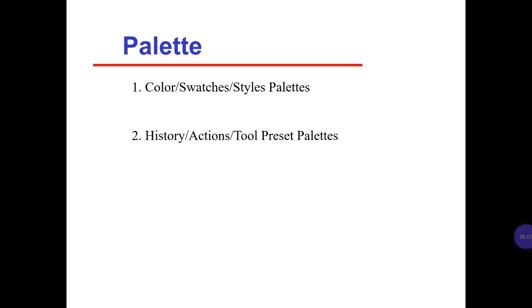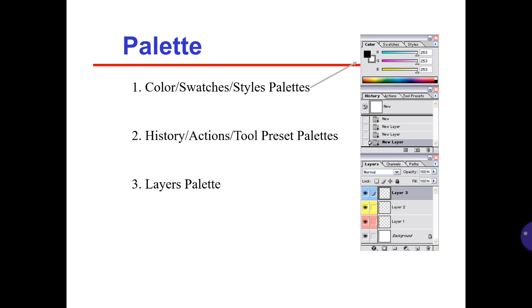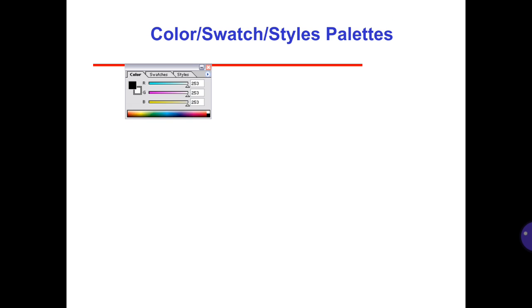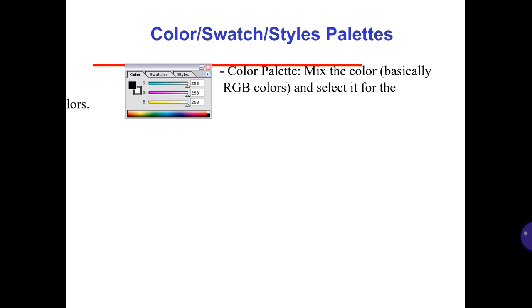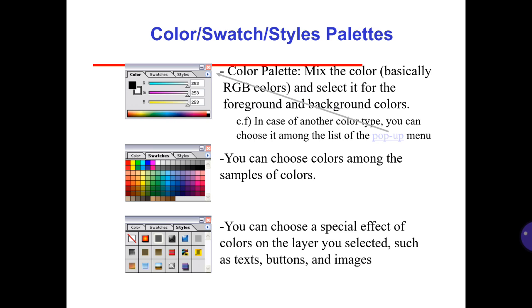Palette number one: Color, Swatches, and Styles palette. Palette number two: History, Actions, Tools, and Present palette. Number three: Layers palette. The color palette is used to mix colors — basically RGB colors — and select them for the foreground and background colors. In case of another color type, you can choose it from the pop-up menu. You can also choose colors among the samples of colors and apply special color effects to a selected layer, such as text, buttons, and images.